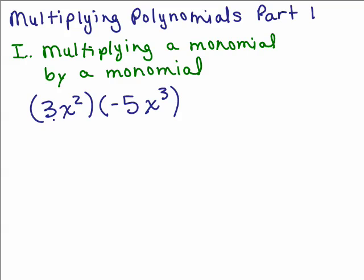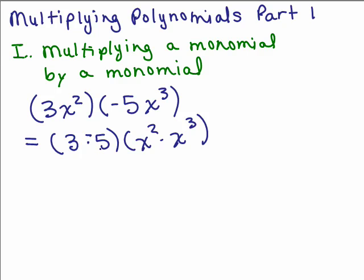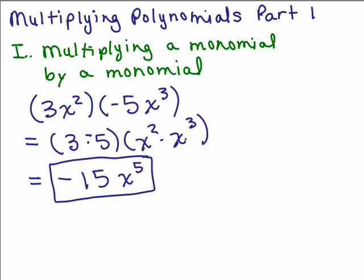We have 3x squared times negative 5x cubed. I'm going to show the middle step of putting the coefficients together: 3 times negative 5 and x squared times x cubed. 3 times negative 5 is negative 15. x squared times x cubed — since the bases are the same, both x's, you add the exponents and 2 plus 3 is 5, so that's x to the 5th. You could also write out x times x times x times x times x and count them up to still get x to the 5th.